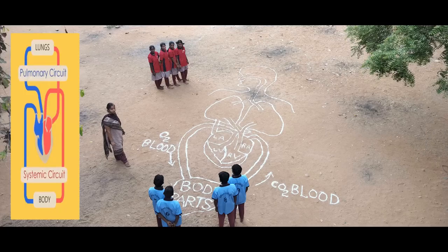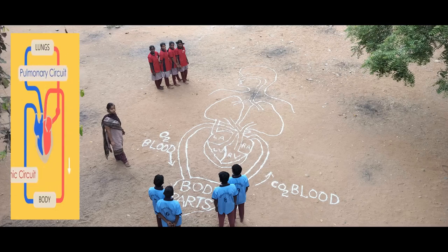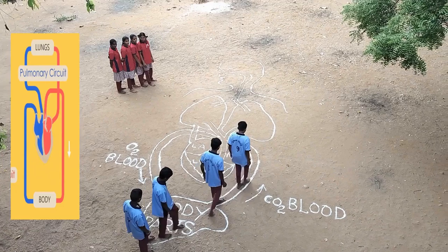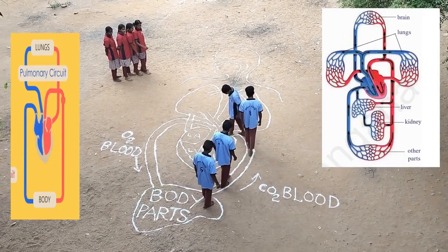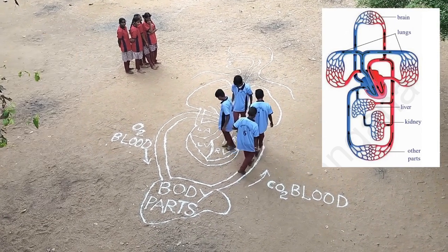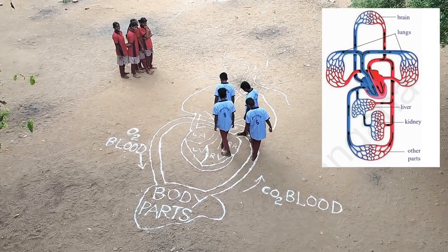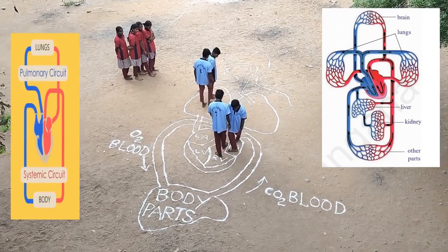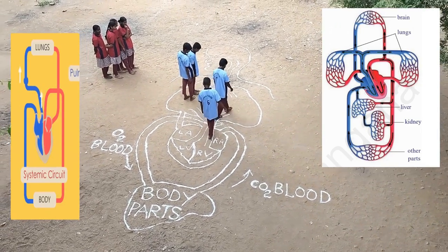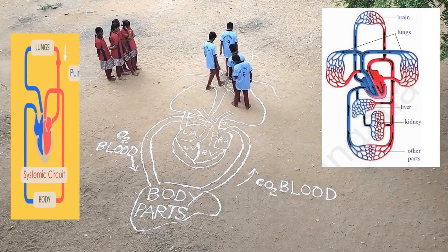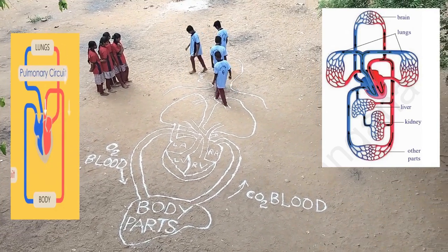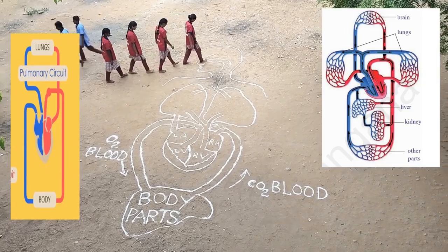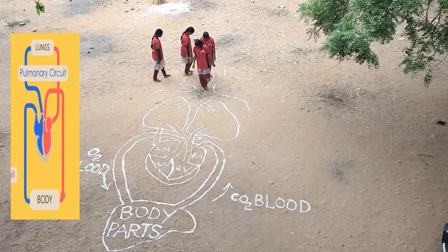Activities and role plays. Now you are observing the double circulation activity. Blue color T-shirt students are acting as deoxygenated blood. Red color T-shirt students are acting as oxygenated blood. From body parts, deoxygenated blood is taken to the right side of the heart through veins. From the right side of the heart, the deoxygenated blood is given to the lungs through the pulmonary artery. From the lungs, carbon dioxide is removed at the time of exhalation.